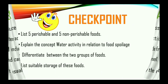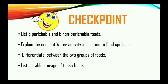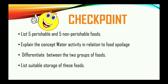Checkpoint: List five perishable and five non-perishable foods. Explain the concept of water activity in relation to food spoilage. Differentiate between the two groups of foods — that is, what is the difference between perishable foods and non-perishable foods? And list suitable storage for these types of food: what is the ideal storage for perishable foods, and what is the ideal storage for non-perishable foods?